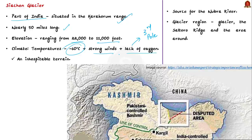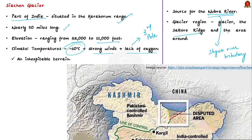The glacier is the source of the Nubra River, which is a tributary of the Siok River. These rivers are part of the Indus River system. When we say the glacier region, it includes the Siachen Glacier, the Saltoro Ridge, and the area around it. The Saltoro Ridge is a crucial mountainous stretch which acts as a watershed.